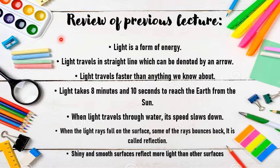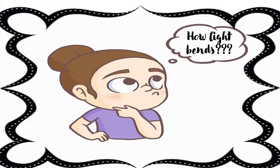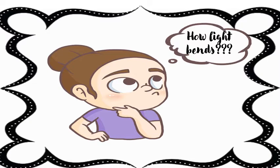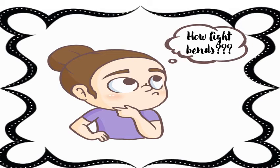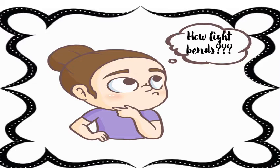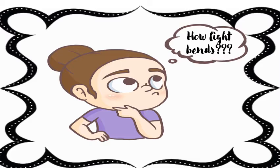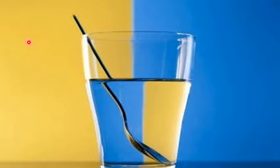Now let's continue from how light bends. We are going to learn about how light bends. Up till now we have learnt that light travels in a straight line. Here you can see a glass of water in which there is a spoon. Is this spoon broken? Not at all — this spoon is in its original form or shape, but if we look at it, it looks different. This is how the light bends.